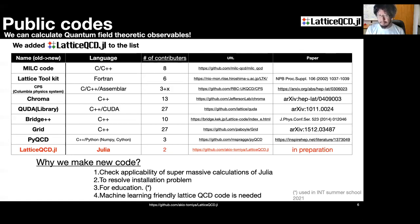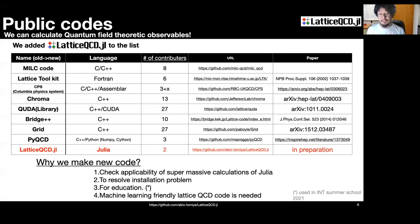Why did we make a new code? First, to check the applicability of large-scale calculation in Julia. Second, to resolve the installation problem — some existing codes are hard to install on new machines. Third, we need a code for education. Fourth, physicists have started to use machine learning in lattice QCD calculations, and we need a lattice QCD code that can natively use neural networks.